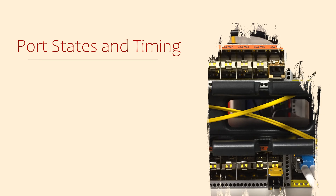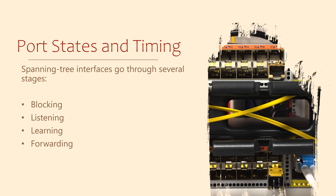The process of assigning a path cost and port roles happens when the interface first comes online. This could be when powering up a switch, when plugging in a cable, or when we enable a port. When the interface comes online, Spanning Tree goes through a few steps.